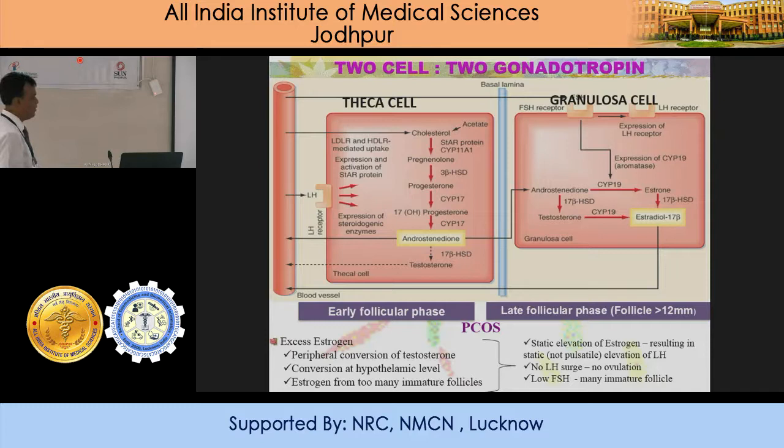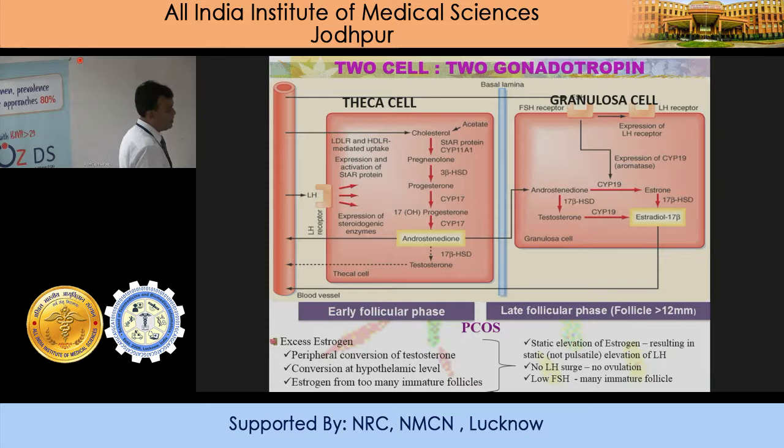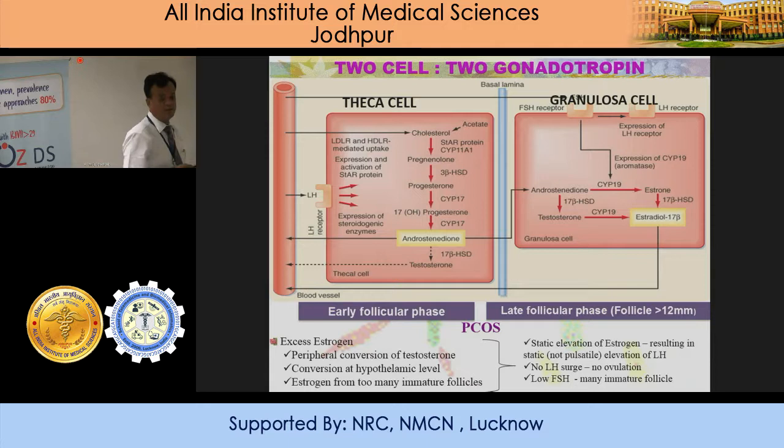In PCOS, there is conversion at the hypothalamic level — estrogen from too many immature follicles leads to a static elevation of estrogen, resulting in no pulsatile LH. We need pulsatile LH for ovulation. There is no pulsatile LH, so there is no ovulation. And low FSH leads to too many immature follicles. This is a simplified explanation for postgraduates.